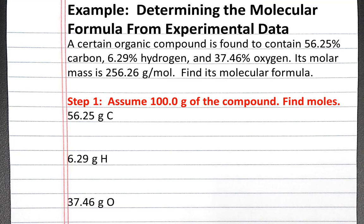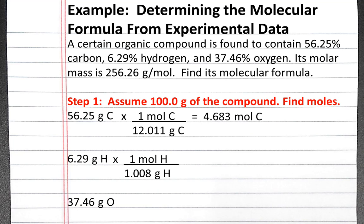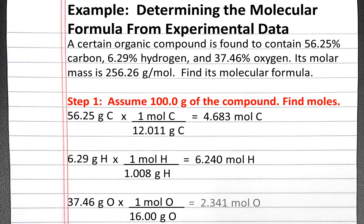Now I'm going to convert these numbers into moles. There are 12.011 grams of carbon for every one mole of carbon, which gives us 4.683 moles of carbon. There are 1.008 grams of hydrogen for every mole of hydrogen, which gives us 6.240 moles of hydrogen. And there are 16 grams of oxygen for every mole of oxygen, which gives us 2.341 moles of oxygen.